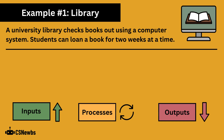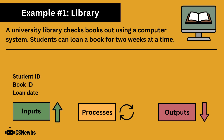Here is an example scenario to consider the inputs, processes and outputs of. A university library checks books out using a computer system. Students can loan a book for two weeks at a time. Potential inputs include the student ID, the book ID and the date of the loan.